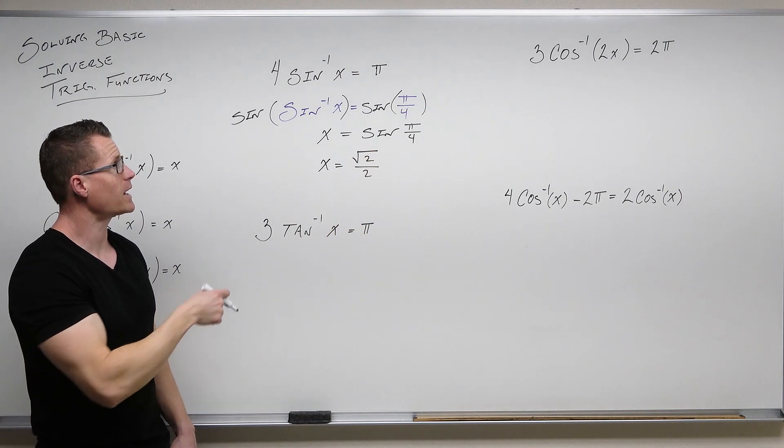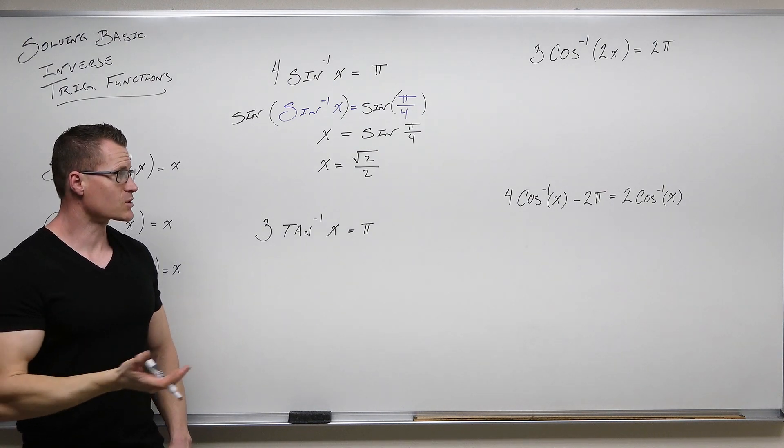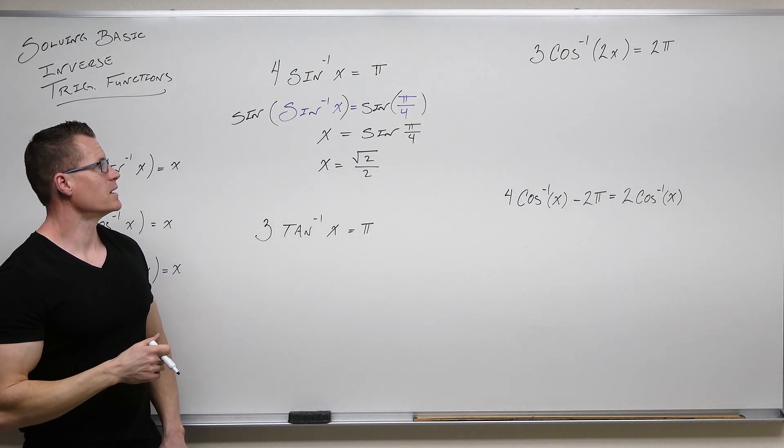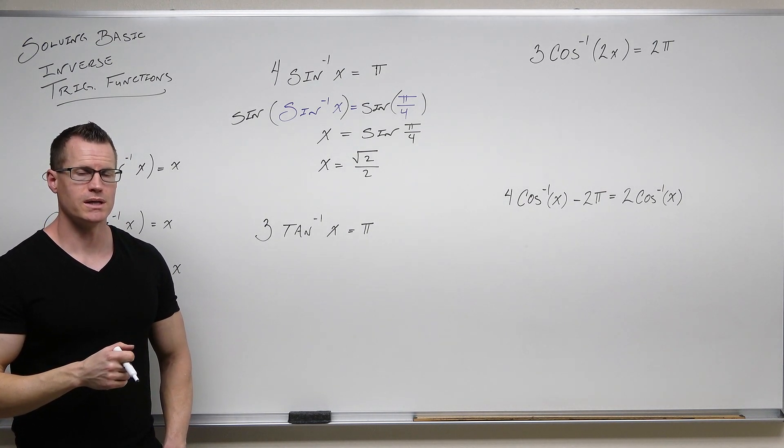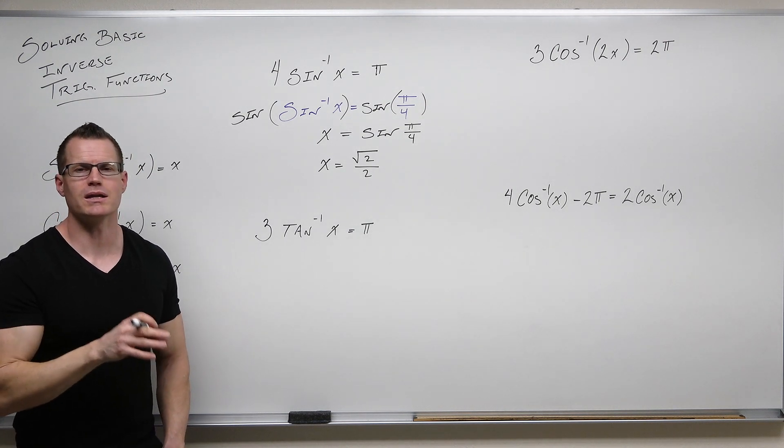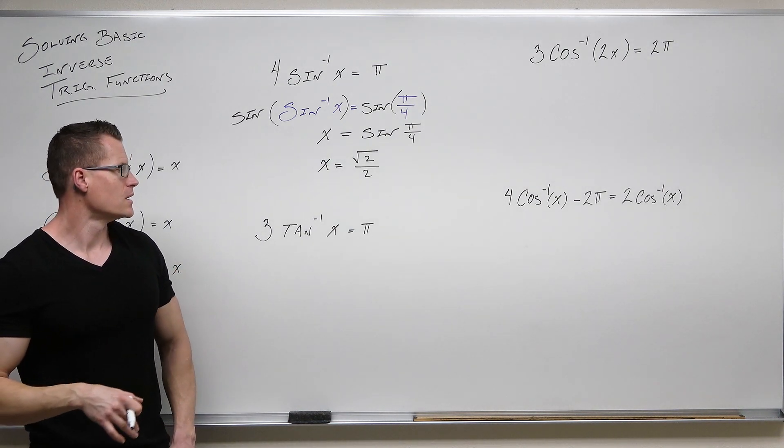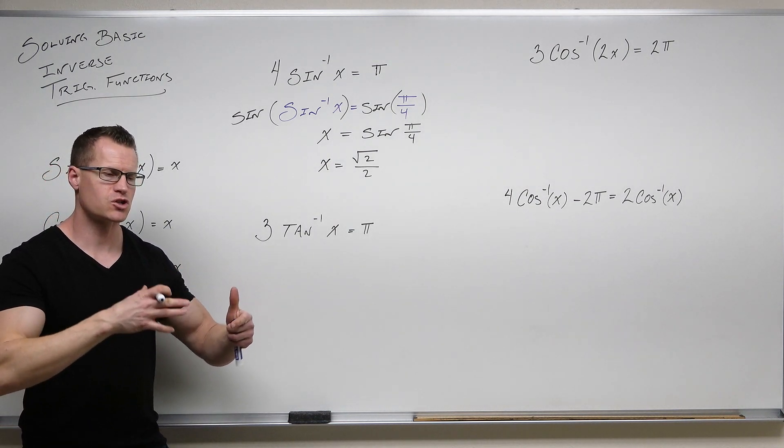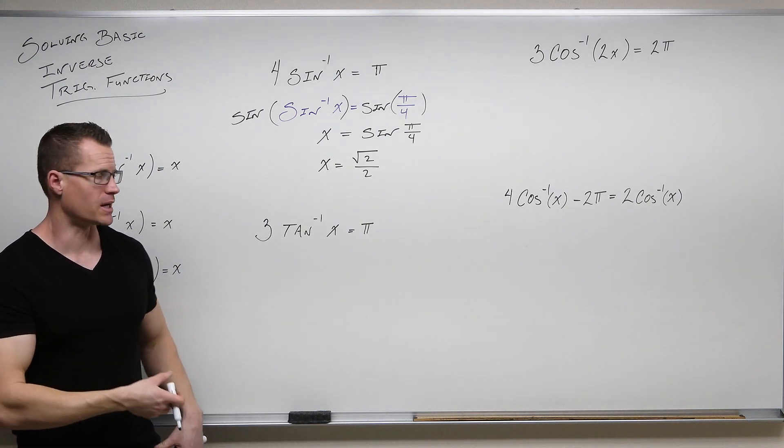And we're done. We just solved that. And in fact, if you plug that in, this would actually work. sin⁻¹(√2/2) is π/4. Four times π/4, the fours cancel, you get π. π equals π. It is true. It does work. So isolate the inverse function, then take the appropriate function on both sides.